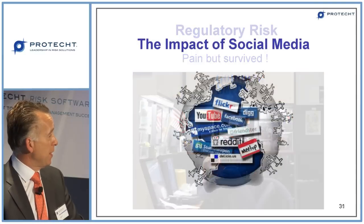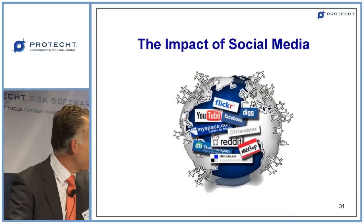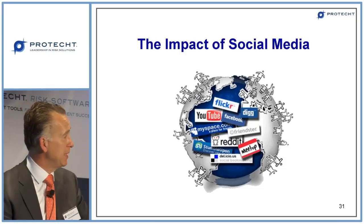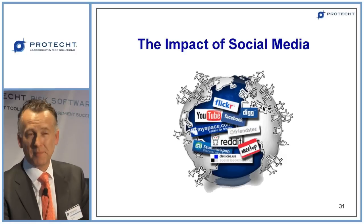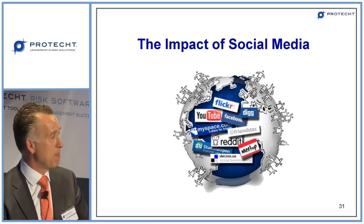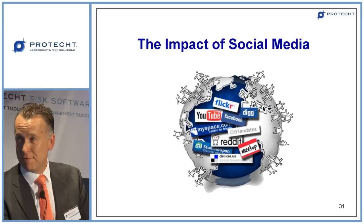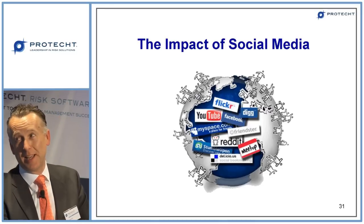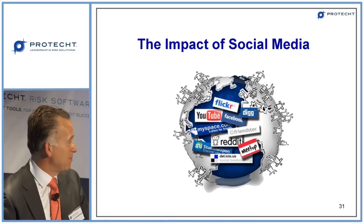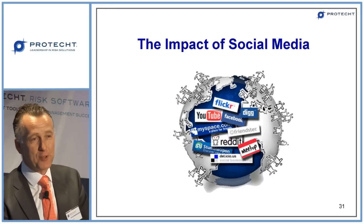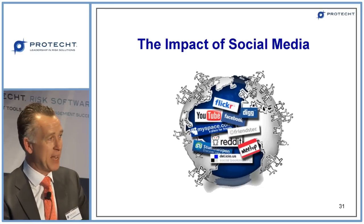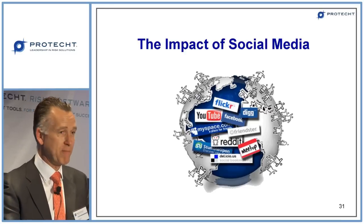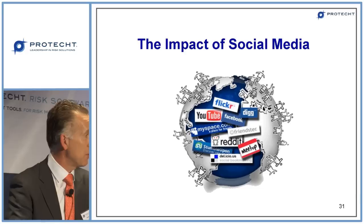Social media as an emerging risk — what does it do to risk velocity? It speeds it up dramatically. We often talk about the time that ATMs gave away free cash and the speed that went around Twitter, with queues of people lining up at ATMs. If that had happened 15 years ago it would have been a blip, but because of social media the velocity dramatically increased and therefore the resulting impact was a lot higher.